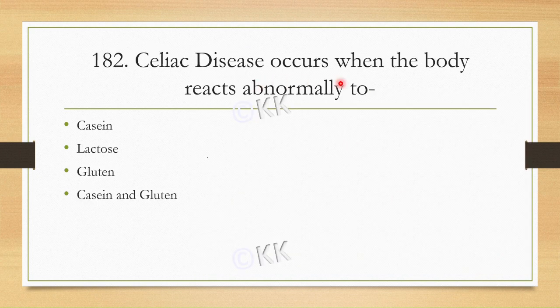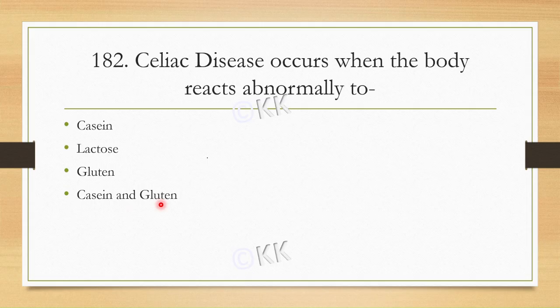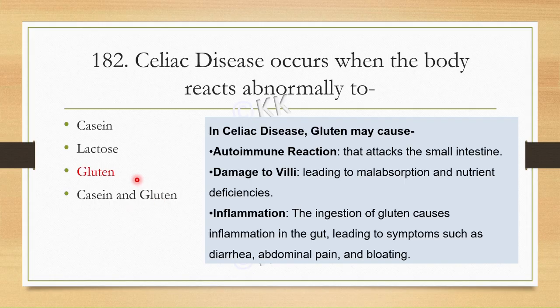Celiac disease occurs when the body reacts abnormally to: Option A: Casein. Option B: Lactose. Option C: Gluten. Option D: Casein and Gluten. The correct answer is gluten.